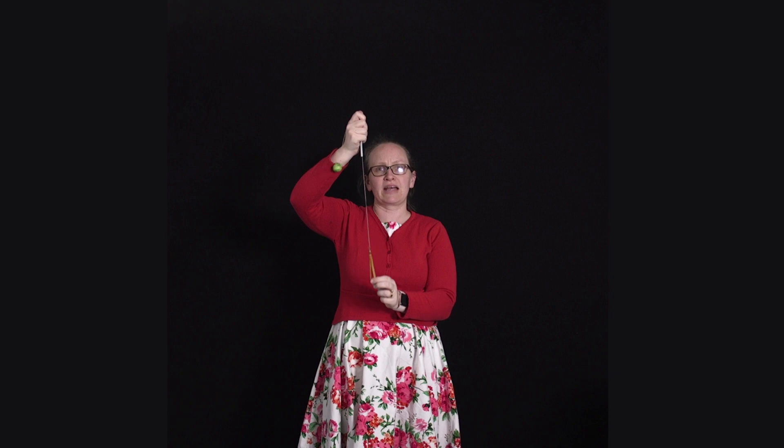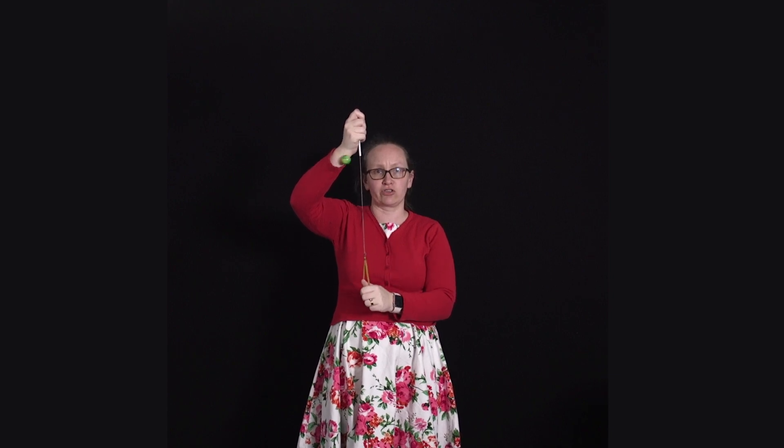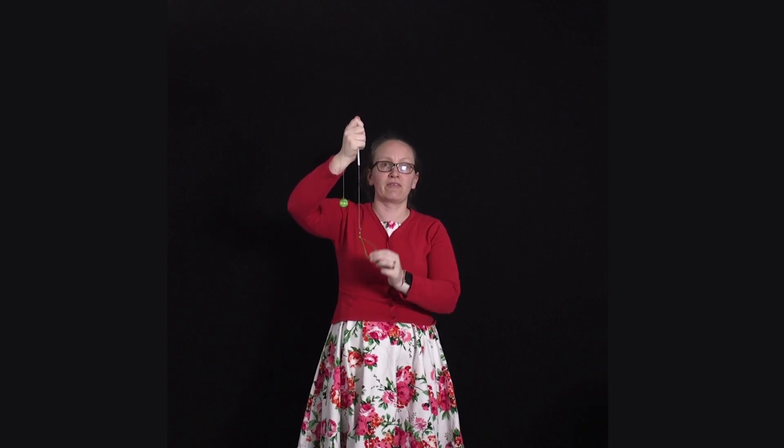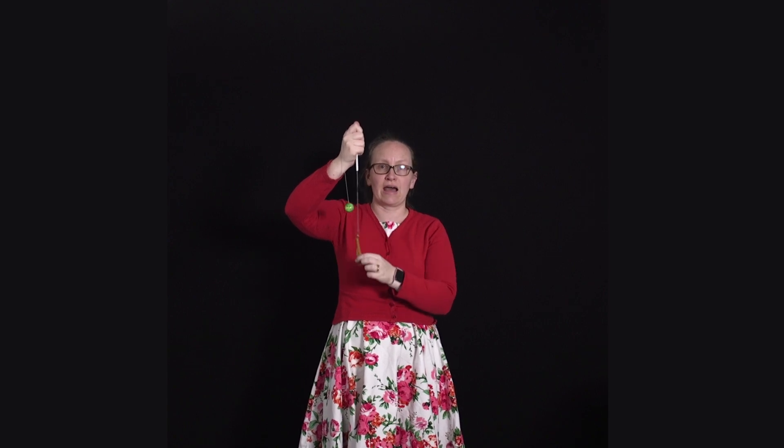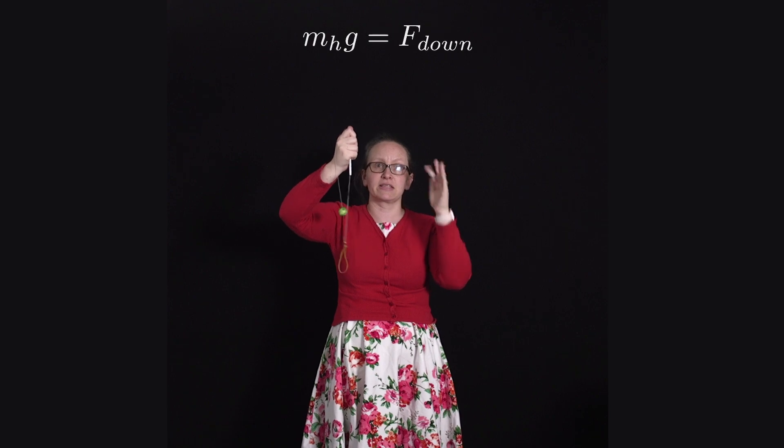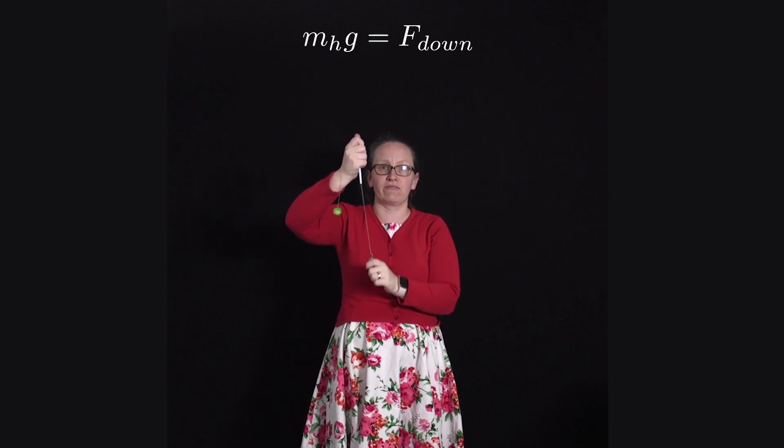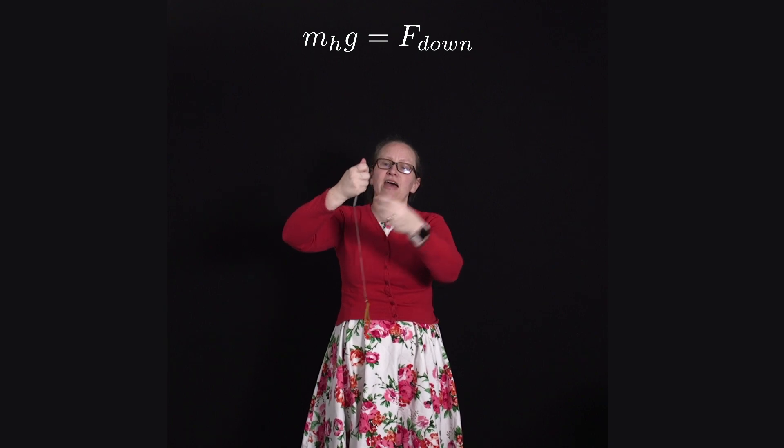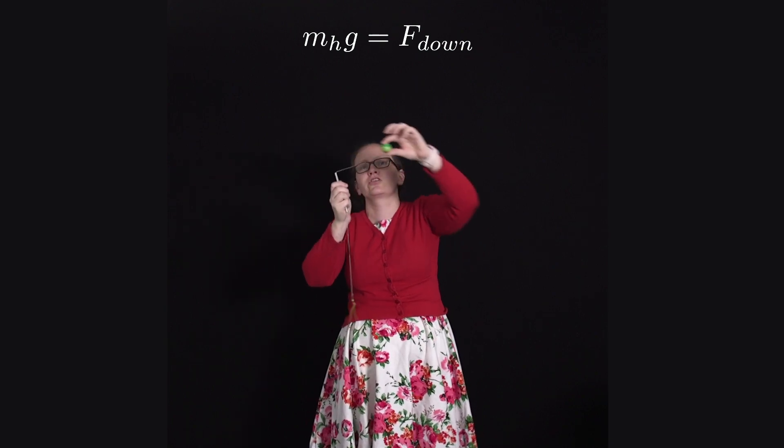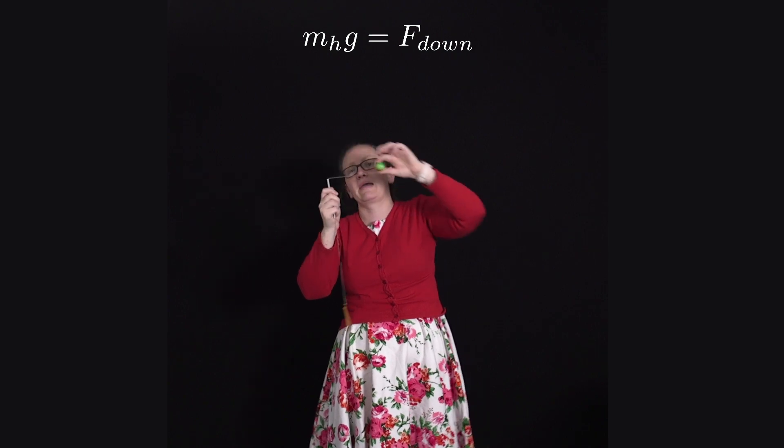So how we calculate this linear relationship is you hang masses from this end of the string. So when you hang masses it provides a weight force downwards. So that weight force is given by the hanging masses, which we'll call m subscript h times g—that's the weight force downwards—and that balances the centripetal force of the swinging mass.